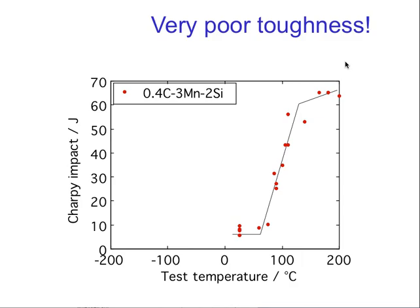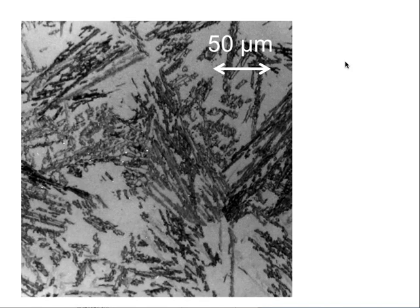When we look at the optical micrograph of that material, we see that there are large regions of austenite that are untransformed. It does not matter how long I hold it at the transformation temperature — they will not transform because of the T0 condition. Now, why is that bad? Look at the scale: 50 micrometers. If that austenite undergoes the TRIP transformation, you will produce untempered martensite which is 50 micrometers in size, and that is very brittle.